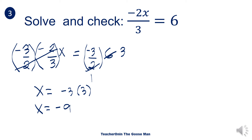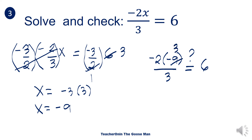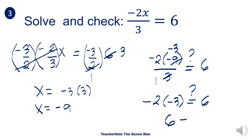We want to verify that x = negative 9 makes the equation true. Substituting into negative 2x over 3: negative 2 times negative 9, all over 3 — is it equal to 6? Note that negative times negative gives us positive. Then negative 9 divided by 3 gives negative 3, and 3 divided by 3 is 1, leaving negative 2 times negative 3, which equals 6. So 6 is equal to 6, and therefore x is equal to negative 9.